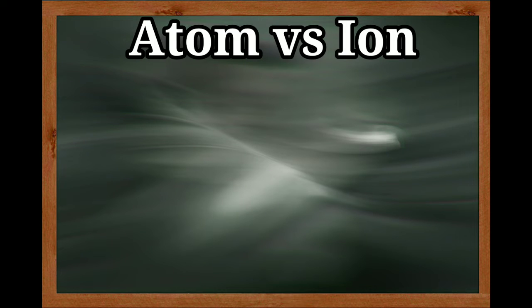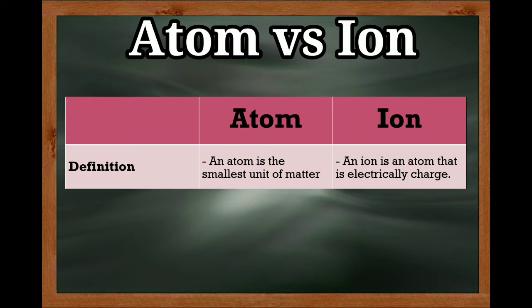What is the difference between an atom and an ion? An atom is the smallest unit of matter, while an ion is an atom that is electrically charged — it can be positively charged or negatively charged.